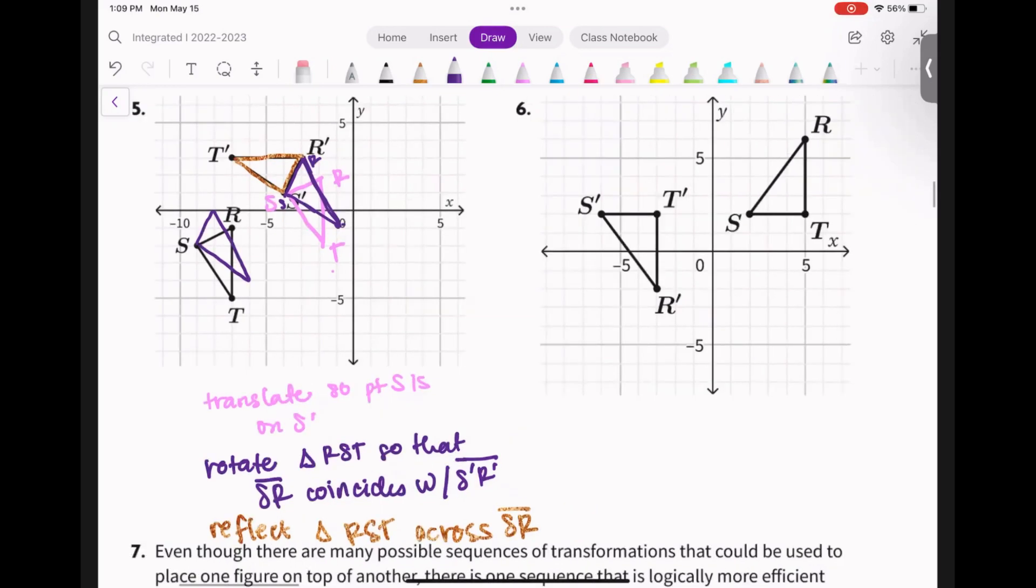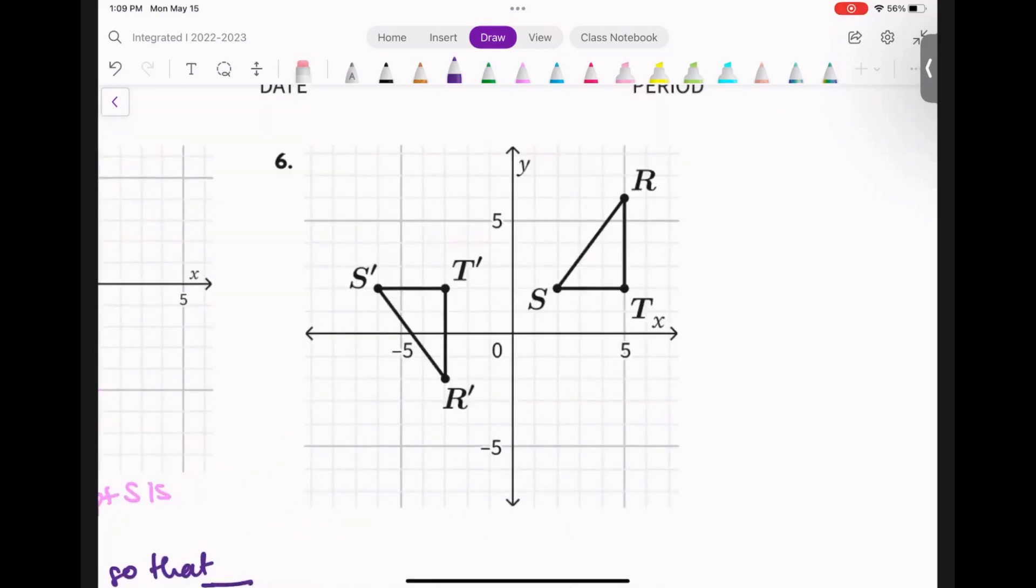So I want you to try this one. What would you do first? You're trying to get SRT onto S prime R prime T prime. Okay, so go ahead and try this one and see what you guys get.